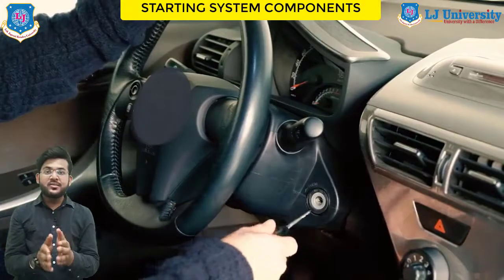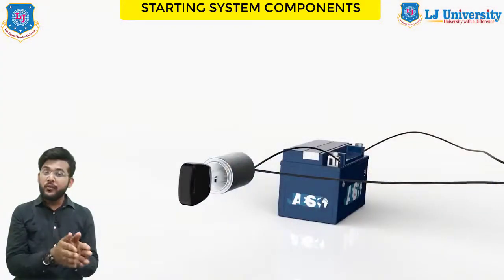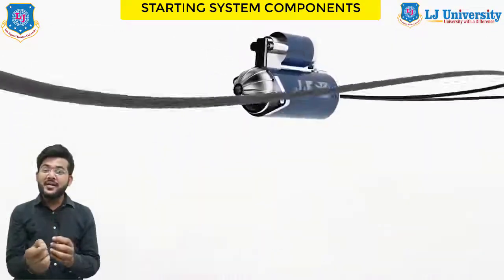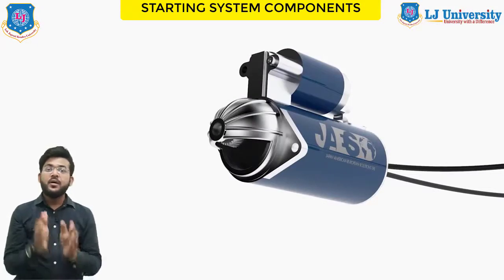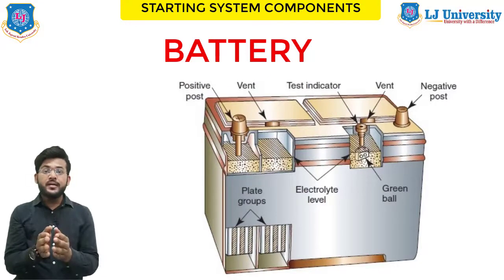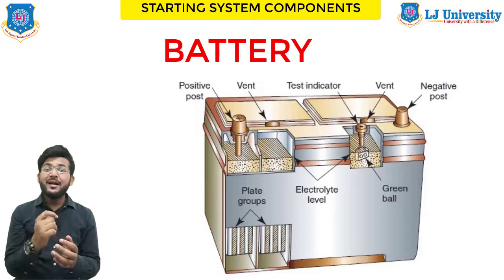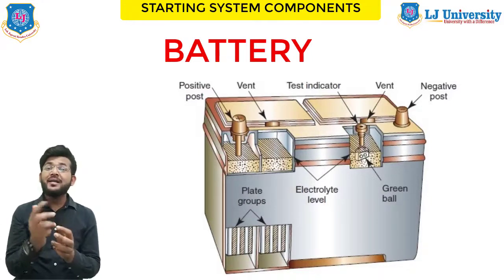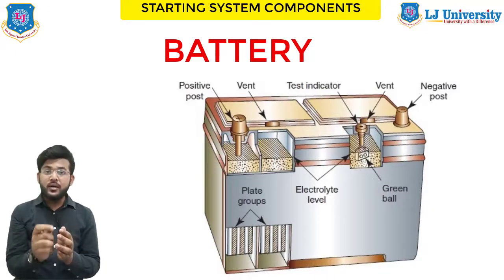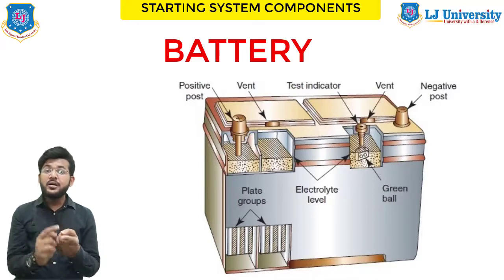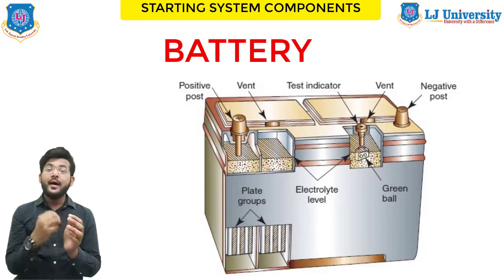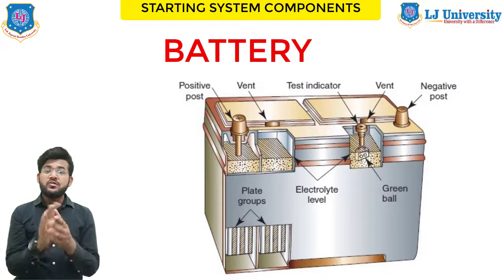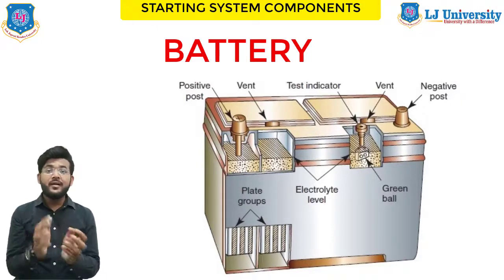In the last session we discussed the basics of the starting system. Let's now discuss all major components in detail. First is the battery. The automotive battery, also known as the lead acid storage battery, is an electrochemical device that produces voltage and delivers current. The electrochemical action can be reversed to recharge the battery, giving many years of service life. Its purpose is to supply current to the starter motor, provide current to the ignition system while cranking, supply additional current when demand exceeds alternator output, and act as an electrical reservoir.